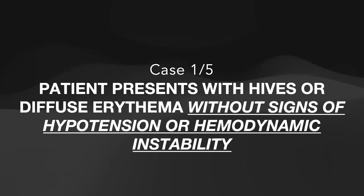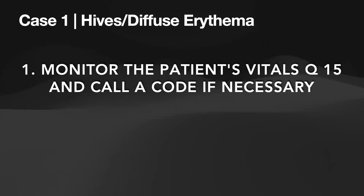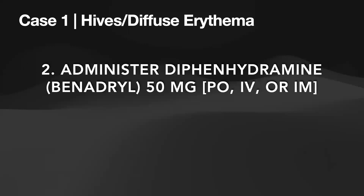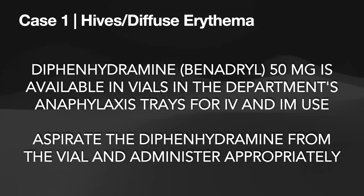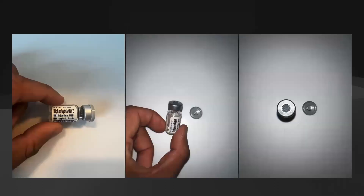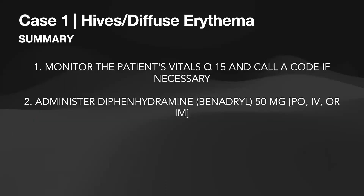Case number one: a patient presents with hives or diffuse erythema. First, monitor the patient's vitals and call a code if necessary. Second, administer diphenhydramine or Benadryl, 50 milligrams PO, IV, or IM. Diphenhydramine 50 milligrams is available in vials in the department's anaphylaxis trays for IV or IM use. Aspirate the diphenhydramine from the vial and administer the dose appropriately. Here is the summary slide for case number one.